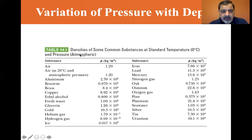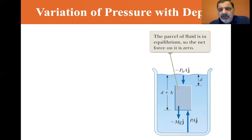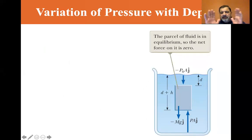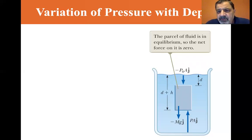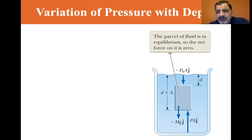The density equation: rho equals mass divided by volume. Now let's imagine a parcel of fluid inside a fluid. The fluid has atmospheric pressure P₀ on the top, giving a force of P₀ times the area. The parcel of fluid is in equilibrium, so the net force on it is zero.